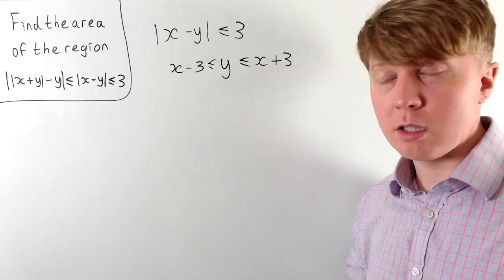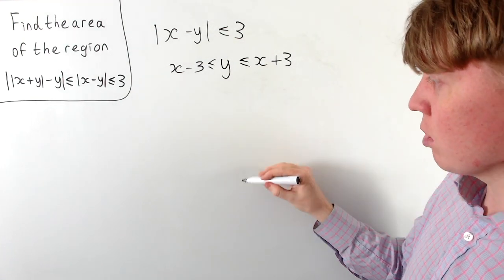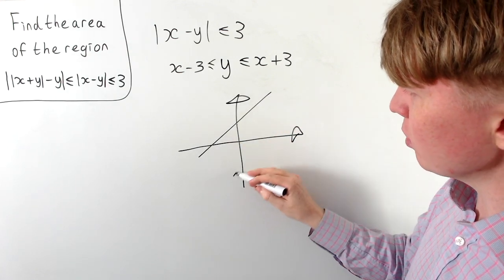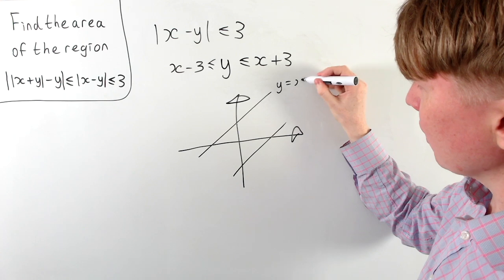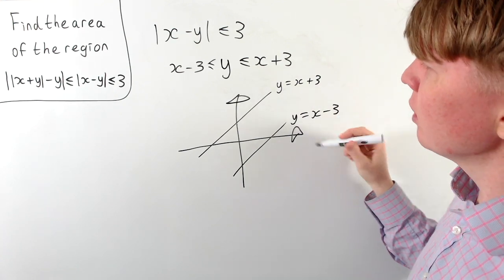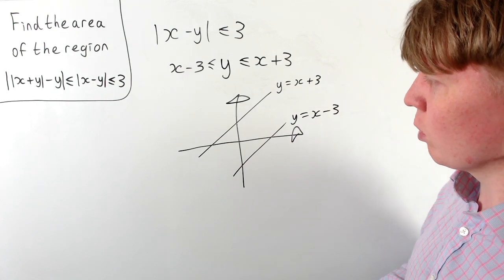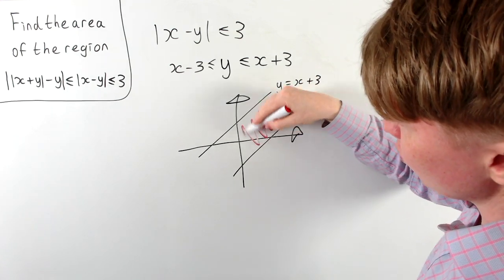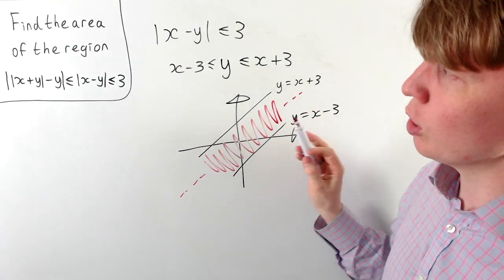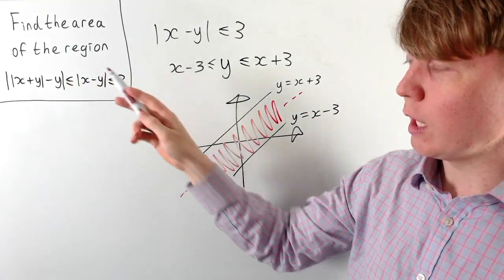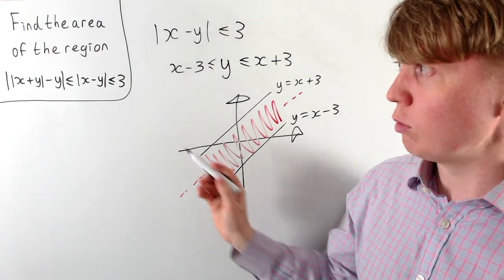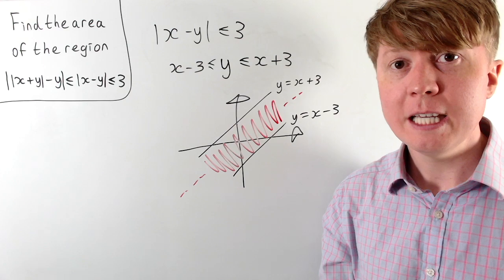So we can sketch this region. We know y is less than or equal to x plus 3, and y is greater than or equal to x minus 3. If we draw in y equals x plus 3 and y equals x minus 3, the region we want is just in between these two parallel lines. This region goes on forever both up and down, but we can now find where it overlaps with the second region.